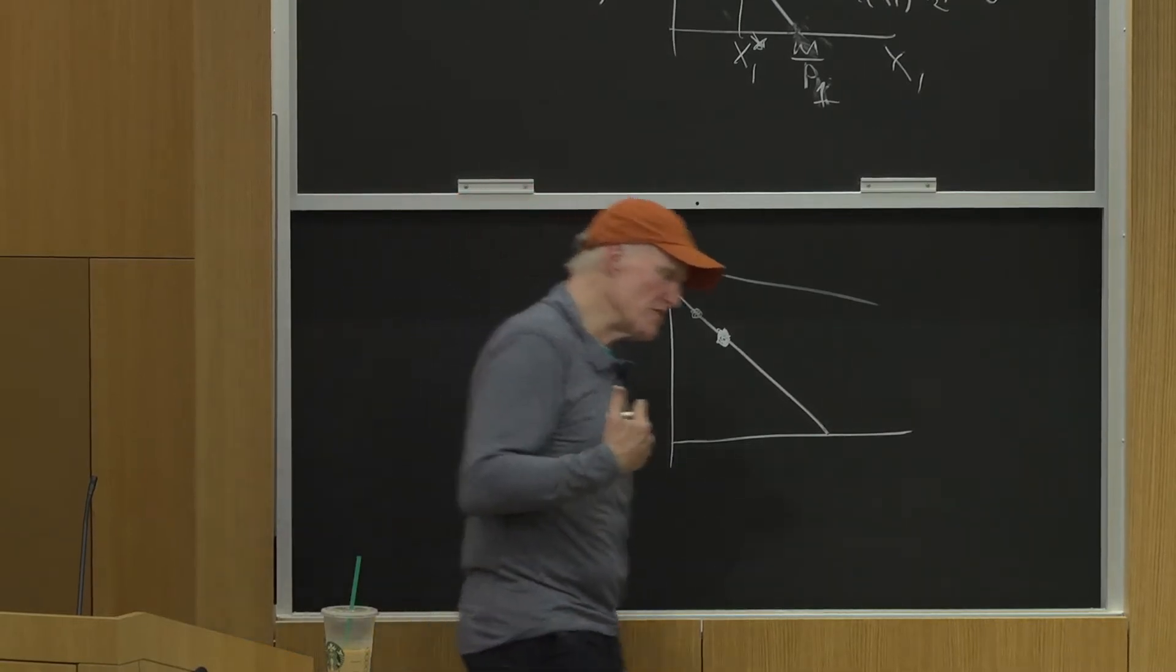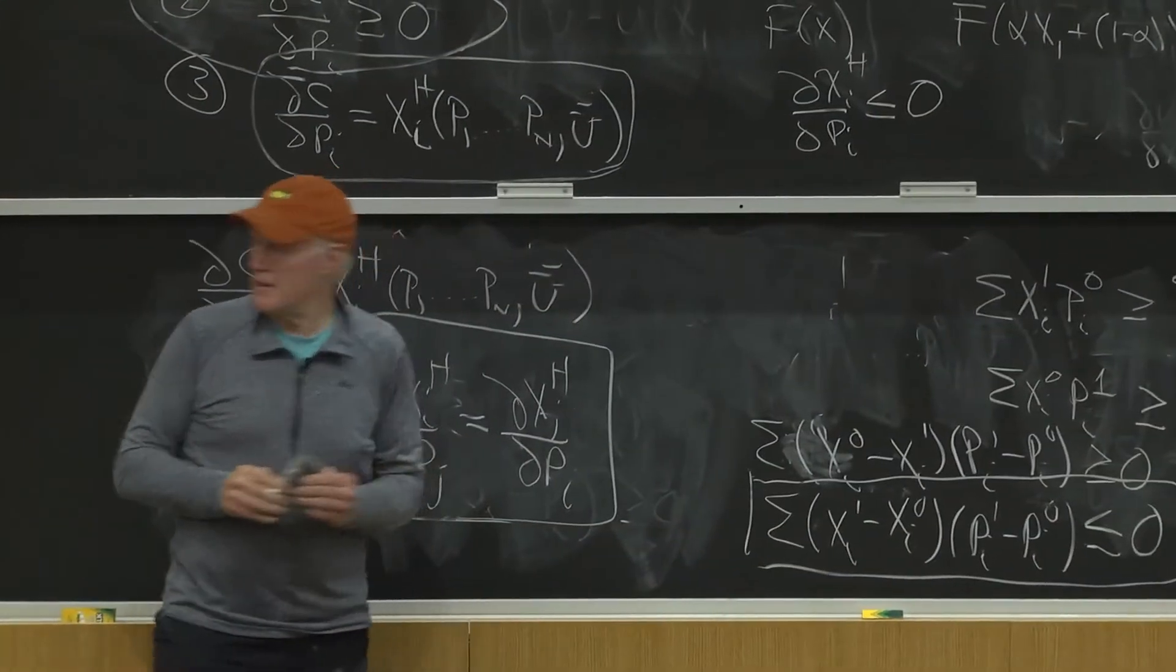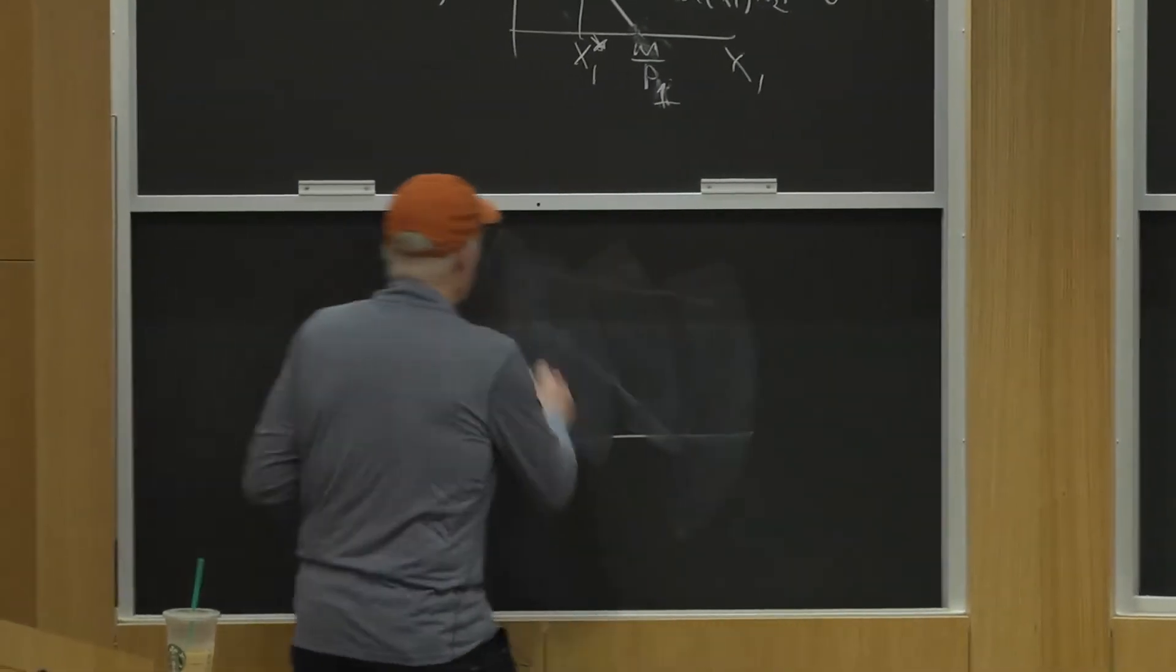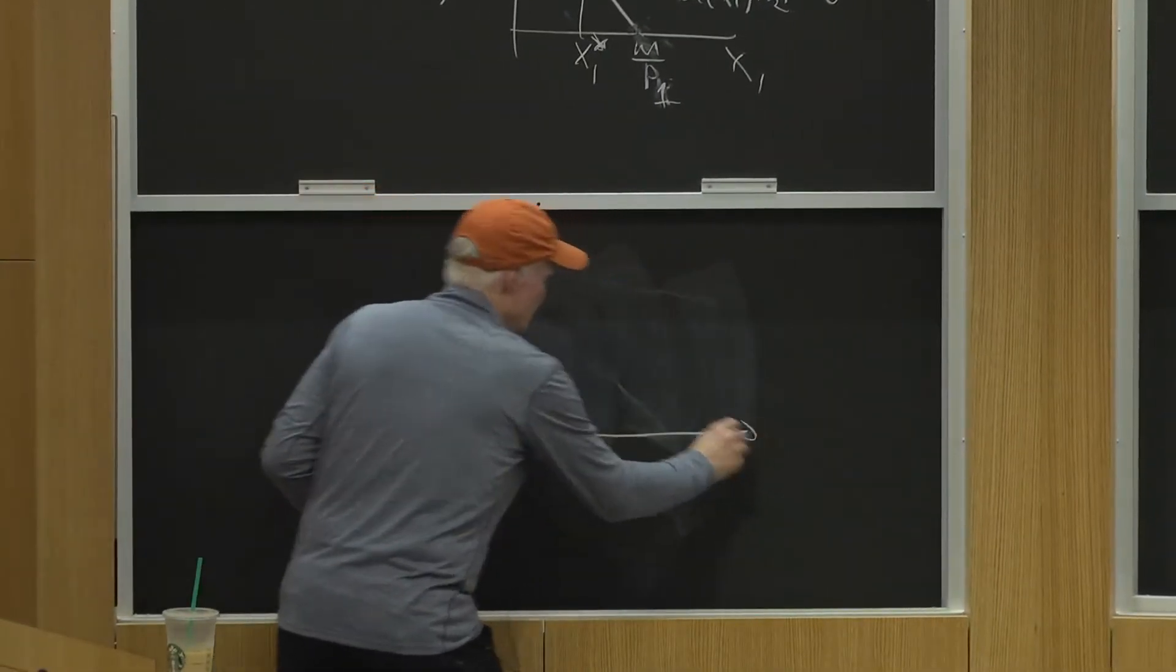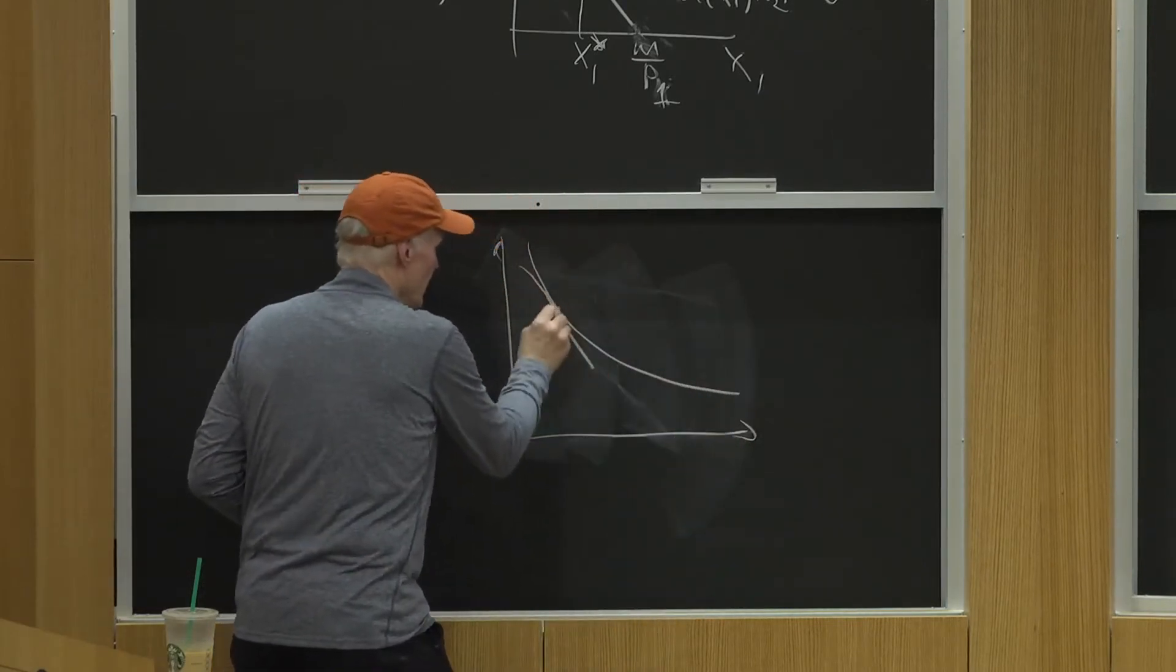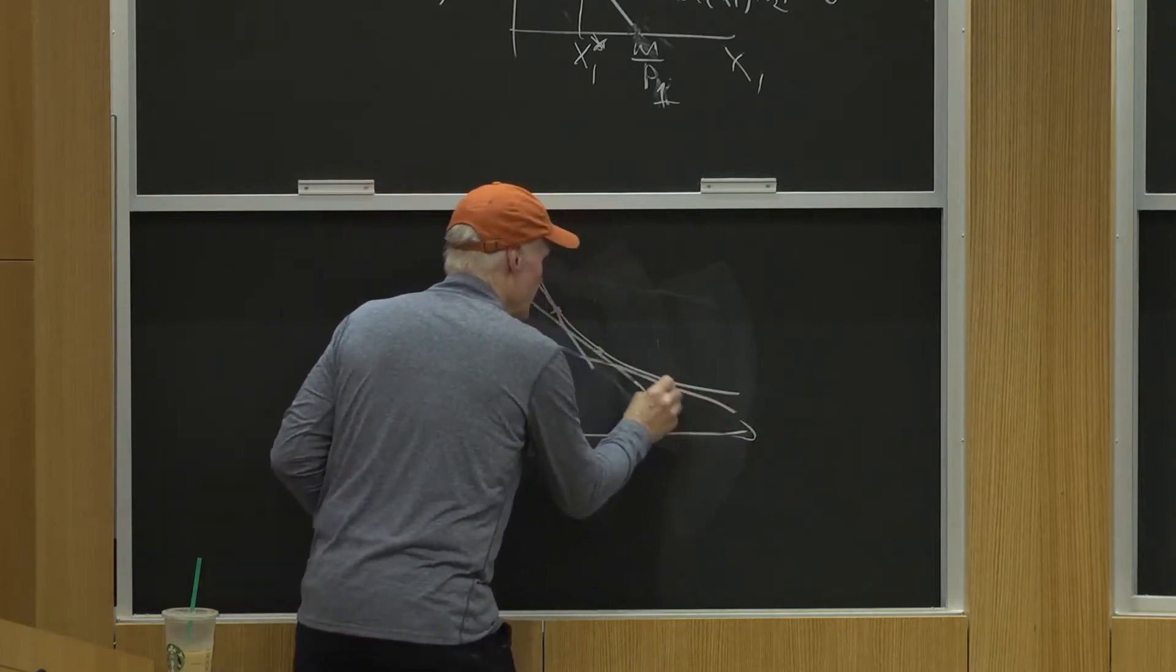Now, when the indifference curve is very curved, it is going to be related, because in the more common case where it is curved, what's going on in the Hicksian experiment? In the two-good case, it's pretty clear. All I'm doing as I change prices is rotating around the indifference curve.